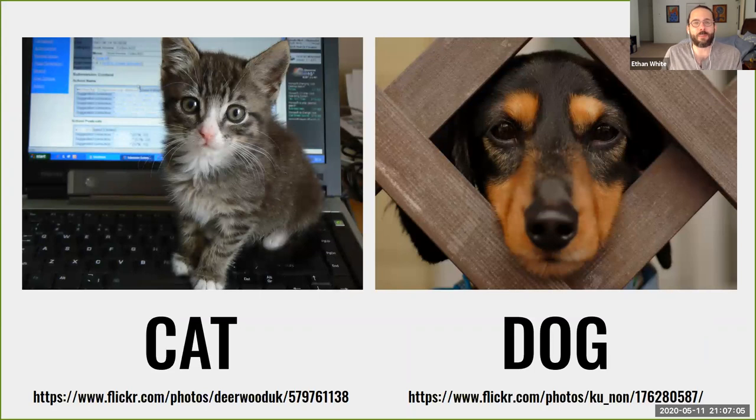One good example of this is image classification and the associated annual ImageNet Challenge, where teams focus on classifying images into categories. And this is why image search works so well now and we can find cute pictures of cats and dogs as often as we need them.